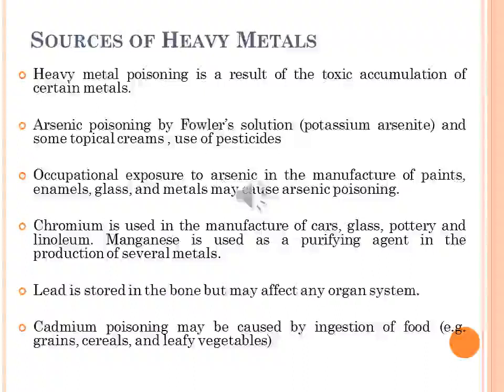Chromium is used in the manufacture of cars, glass and pottery. Manganese is used as a purifying agent in the production of several metals. Lead production workers, battery plant workers, welders and solderers may be overexposed to lead if proper precautions are not taken. Lead is stored in bone but may affect any organ system. Mercury is used by dental assistants, hygienists and chemical workers. Cadmium poisoning may be caused by ingestion of food grains, cereals and leafy vegetables, and cigarette smoke; occupational exposure to cadmium in metal plating, battery and plastic industries may also occur.